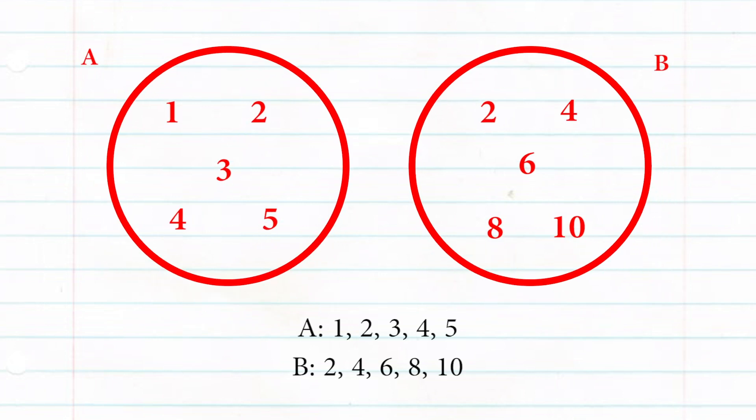Listing down the elements, we see that their common elements are 2 and 4. Drawing up a Venn diagram, it would look like this.